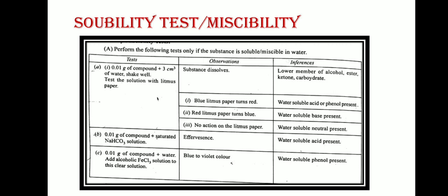This test tells us whether the compound is acid, phenol, base, or neutral. In the second test, take 0.01 gram of compound, add saturated sodium bicarbonate solution. If effervescence occurs, a water-soluble acid is present. In test C, take 0.01 gram of compound, add water, then add alcoholic FeCl3 solution. An appearance of blue to violet color means a water-soluble phenol may be present. In this way, you can determine whether your compound is a water-soluble phenol, acid, base, or neutral.